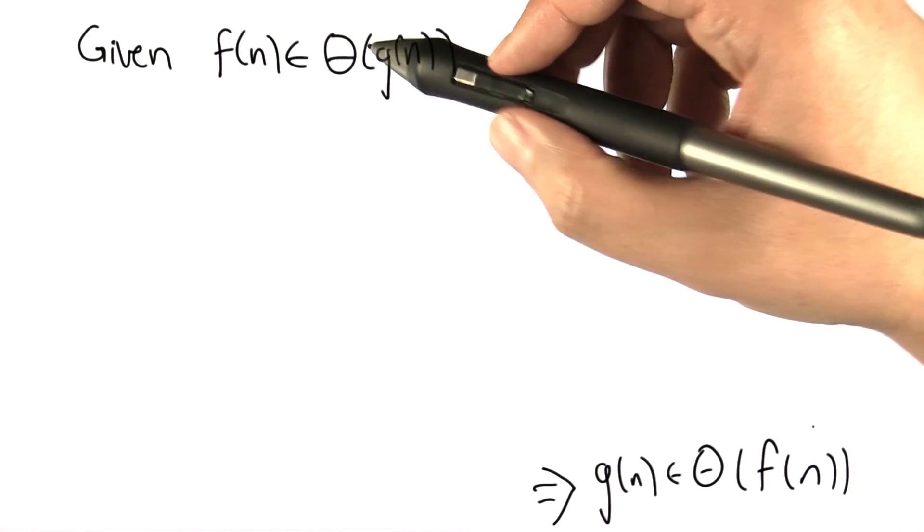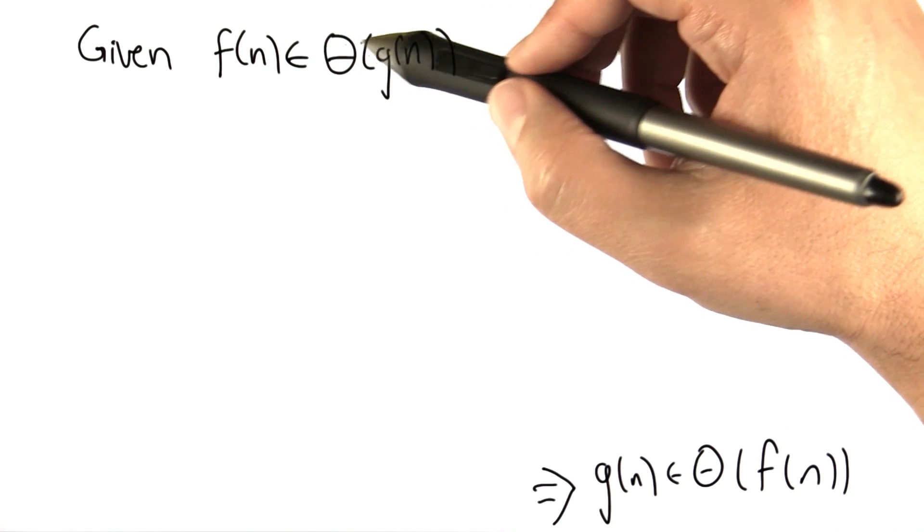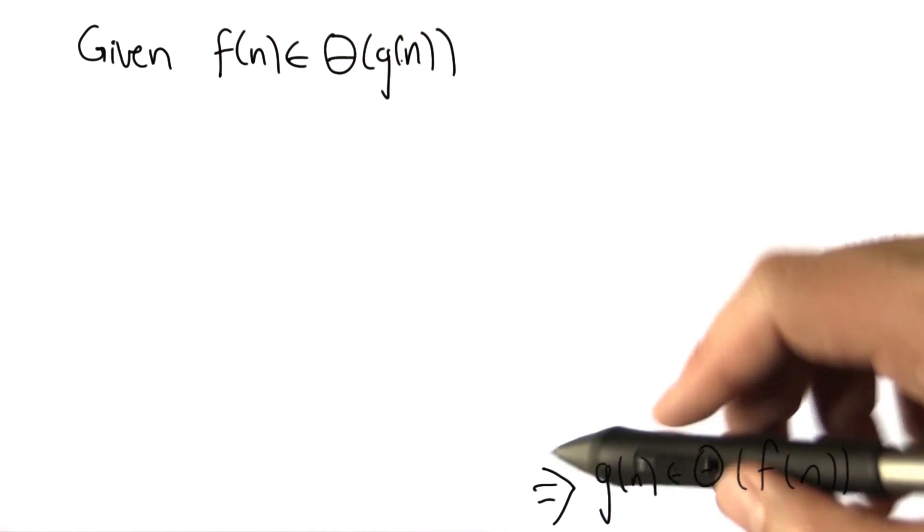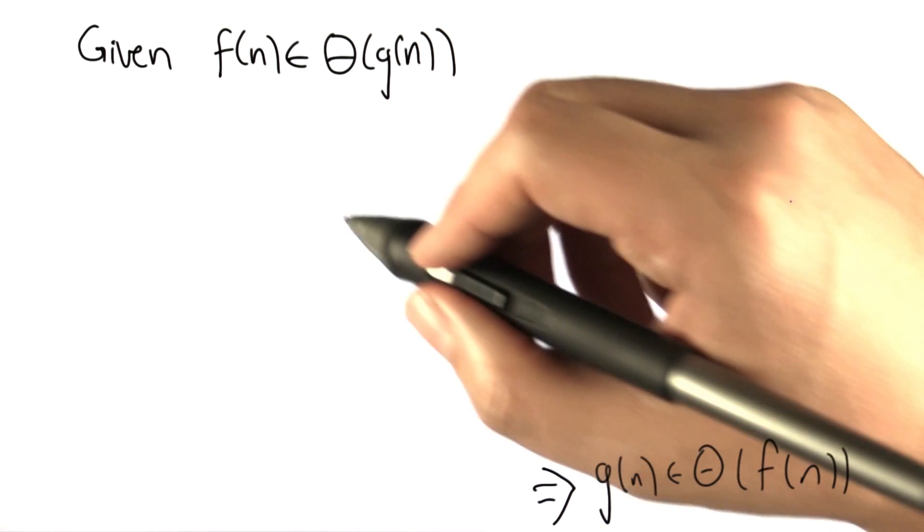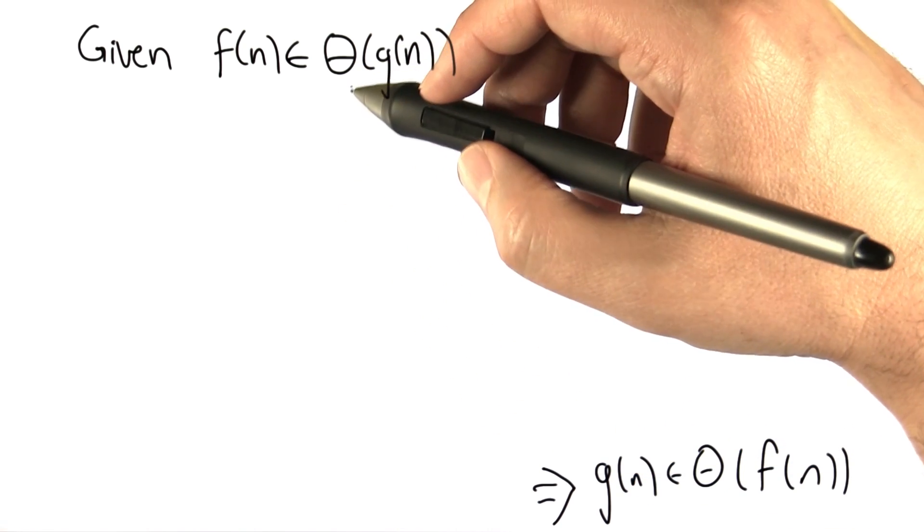What we'd like to show is that if we're given a function f that is in big theta of g, we can turn that around and also infer that g is in big theta of f. The way we're going to show this is to go back to the definition of big theta.